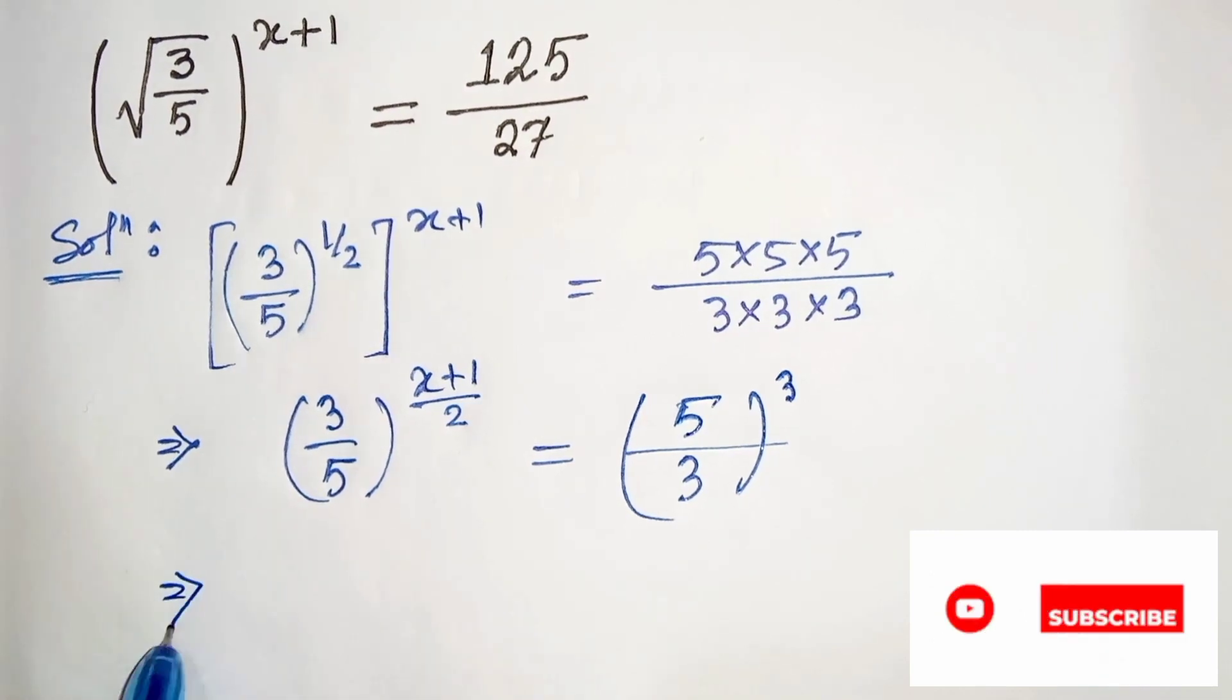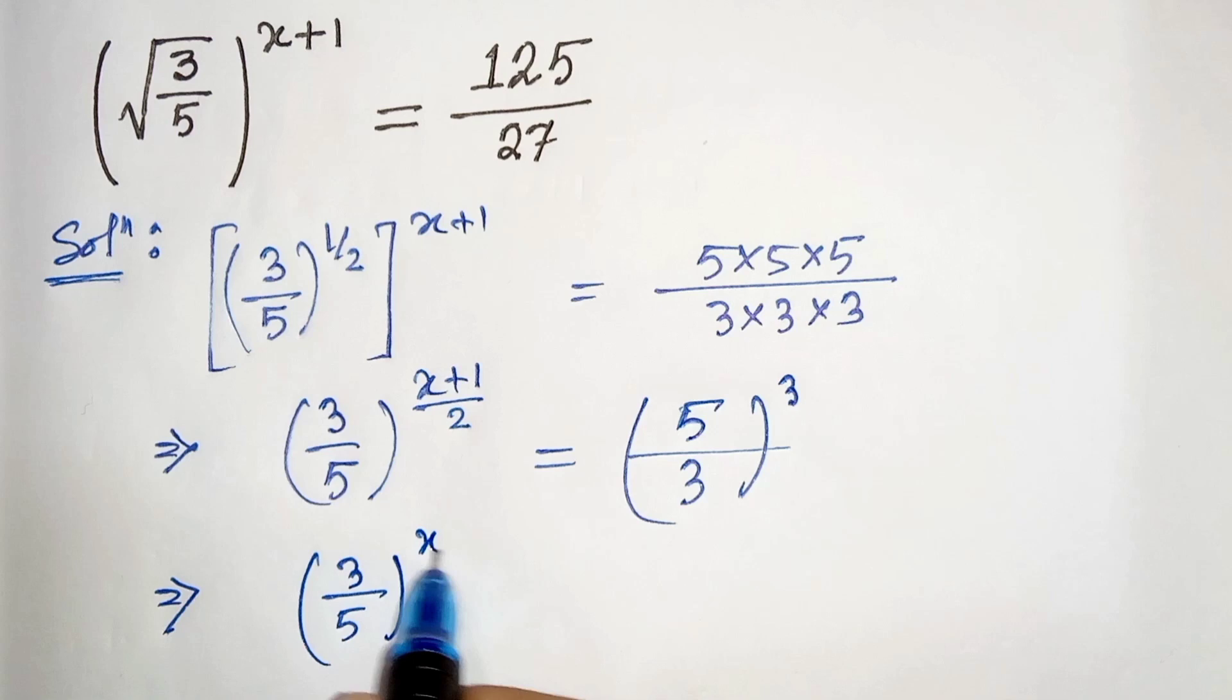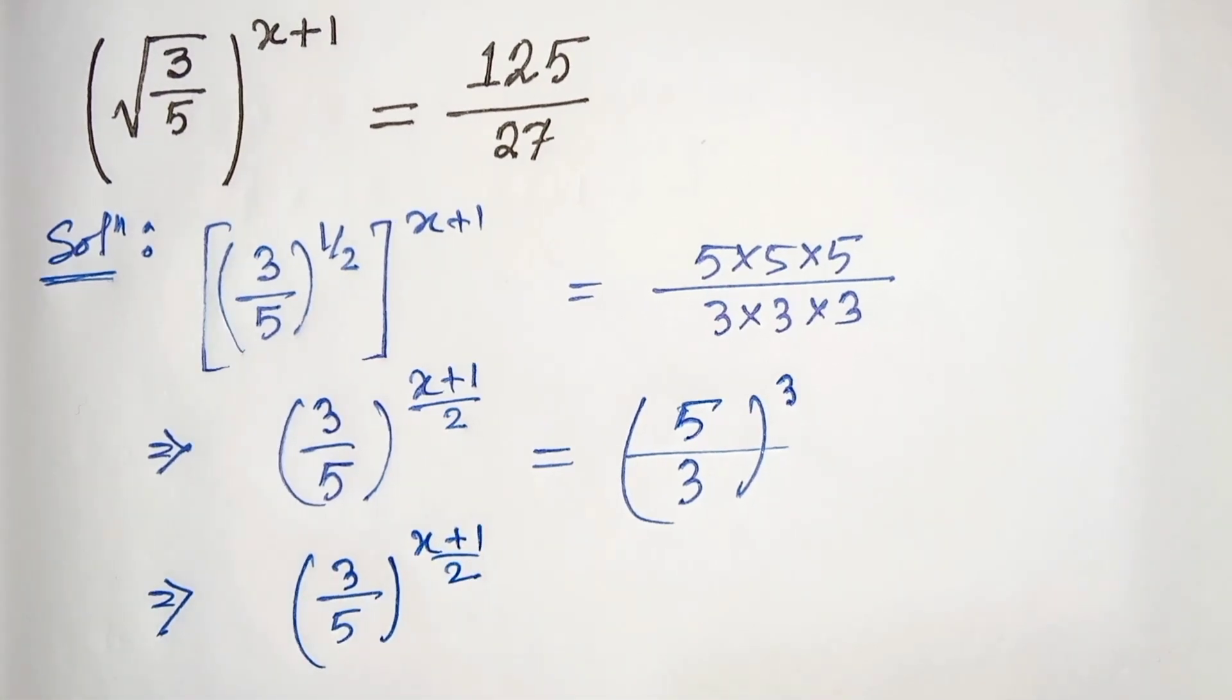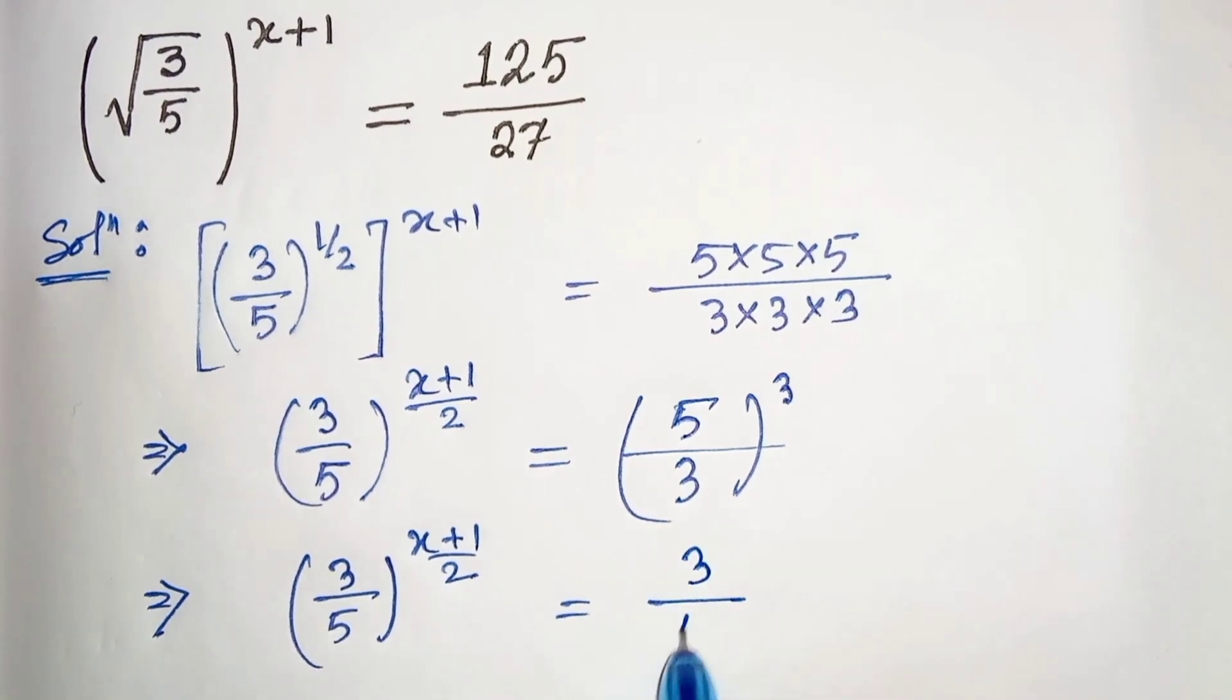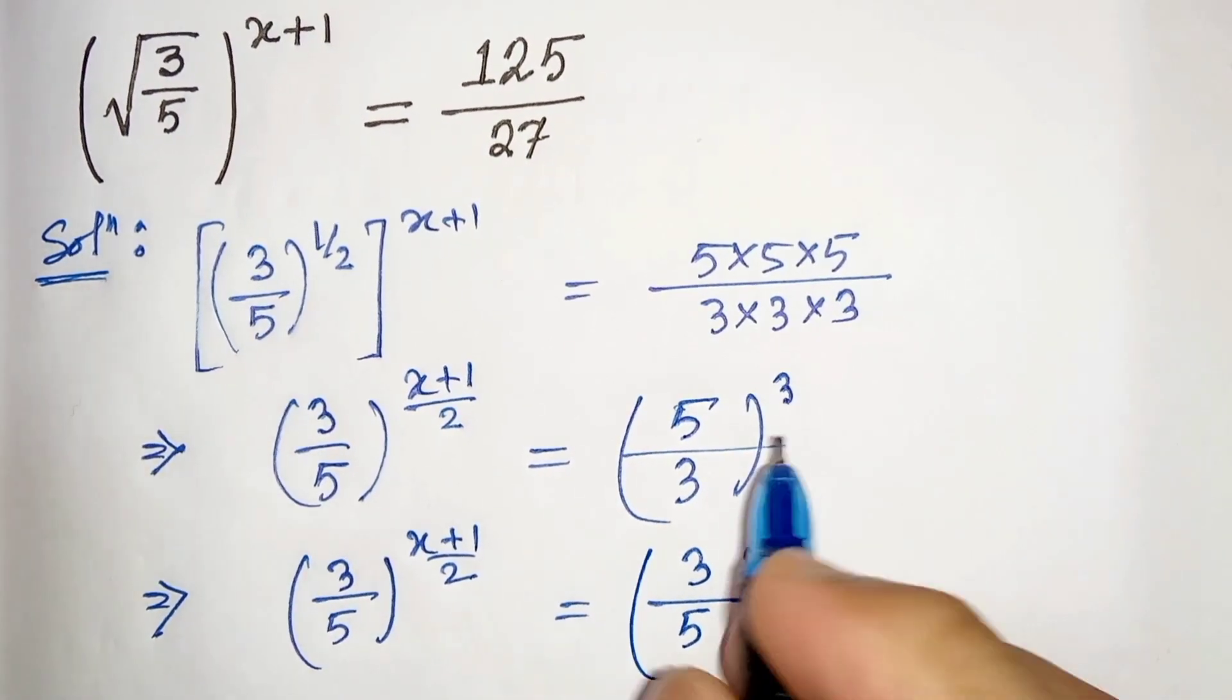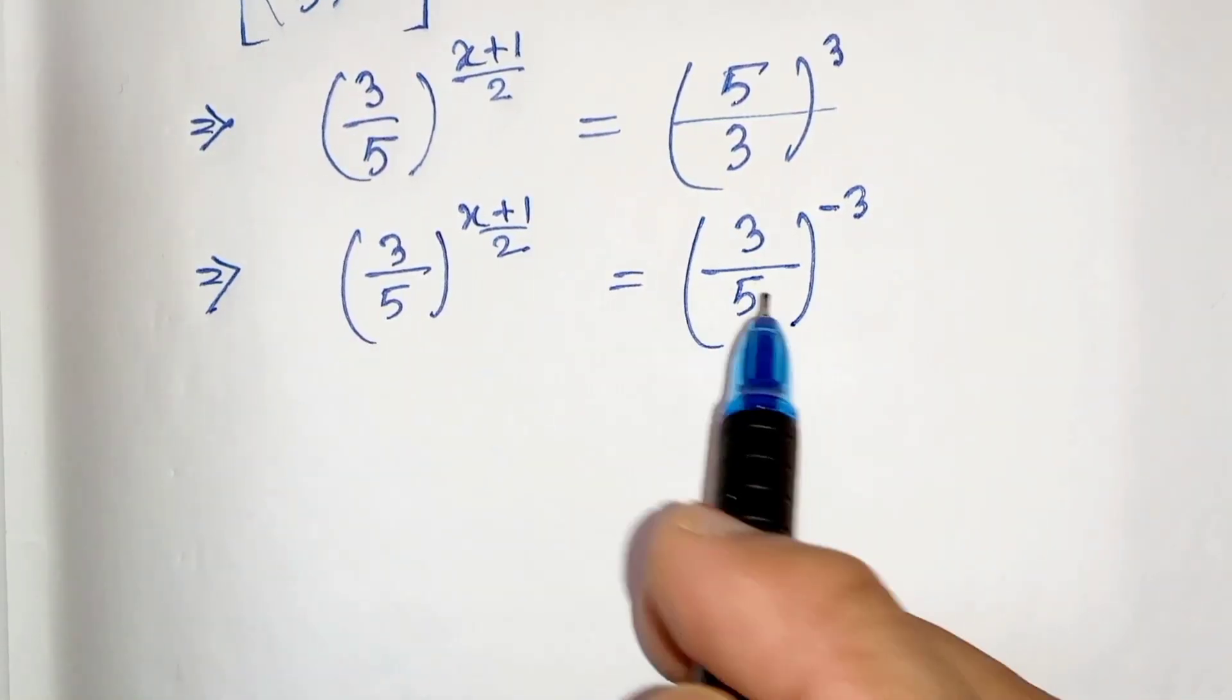Now in the next step, let's keep it as it is and from here let's reciprocate this 3 by 5. If we take 3 by 5, then the power will be minus 3. Now since the bases are equal, we can equate the powers.